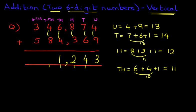Now we're going to add the ten thousands. We have 4 plus 8 plus the 1 we have carried over. So 4 plus 8 is 12, plus the 1 is 13. So let's write that down. 1 here and 3 over here.